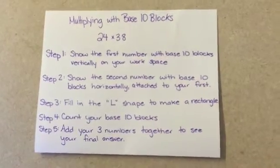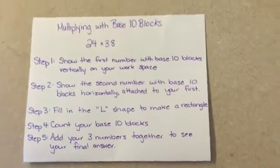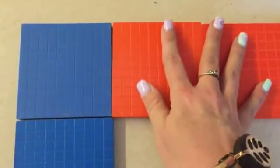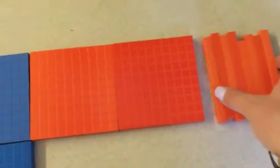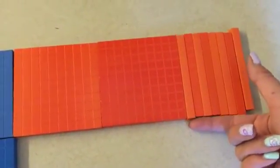Next, I need to show the second number with my base 10 blocks horizontally attached to our first step. So I already have 10 here. I'm going to add 2 flats to make it 30 and 8 rods to make it 38.